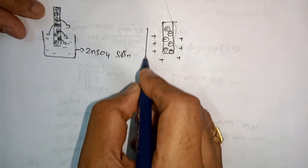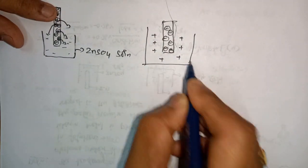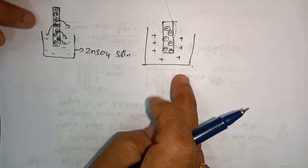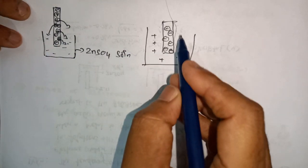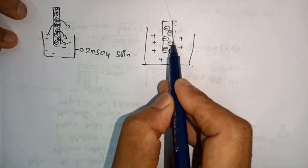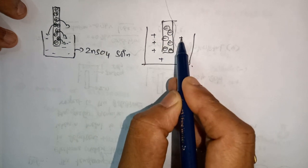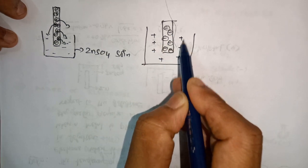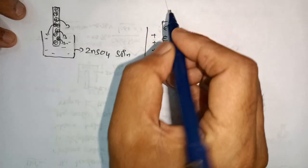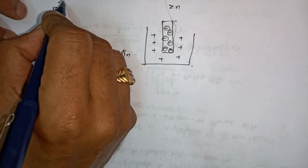If I keep zinc in zinc sulfate solution, the zinc rod gets a negative charge because electrons are left behind. And around the rod, a positive layer is formed from the Zn²⁺ ions that came out into solution.